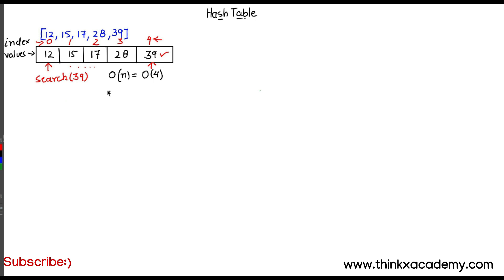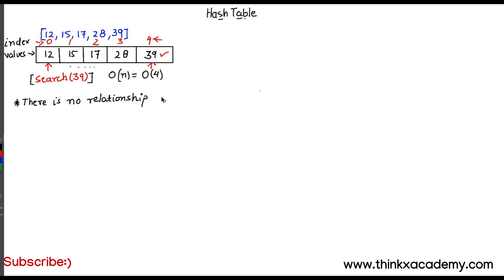Even if you use a binary search tree or other data structures, you can get better time complexities like O(log n) or O(n log n). This is how we perform search operations in different data structures. Now let's see how we can optimize this using a hash table. The idea is to convert all the index values into keys. An important point here is that in an array, there is no relationship between index and values.